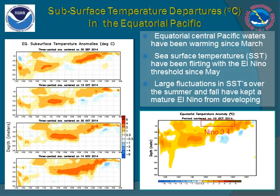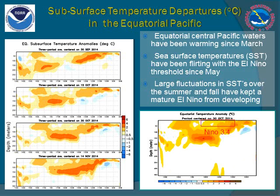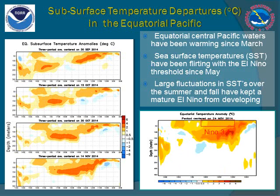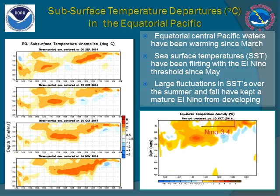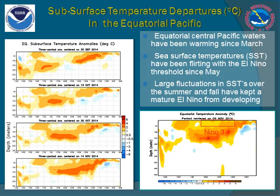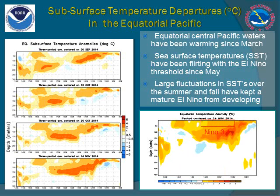Much of what happens at the surface of the ocean can be traced to events occurring several hundred meters below the surface. Organized deep ocean waves move large amounts of water west to east as well as from the open ocean depths to the surface and vice versa.